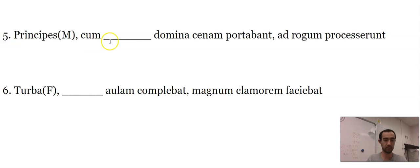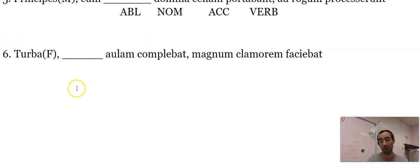Principes. Cenam. Our chiefs. Cum. I already know what this one is because I know what the word cum is. But domina is a nominative. She's the one who's doing the carrying. The dinner, which is accusative. This cum has to be ablative because it's after cum and prepositional phrase.